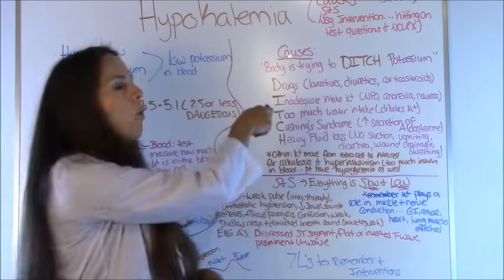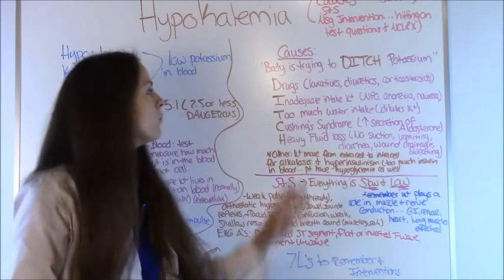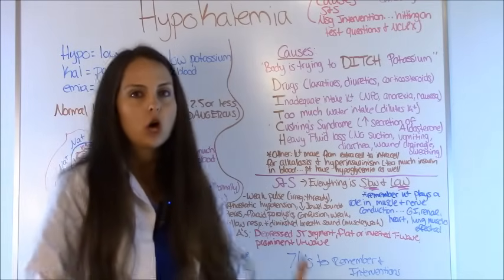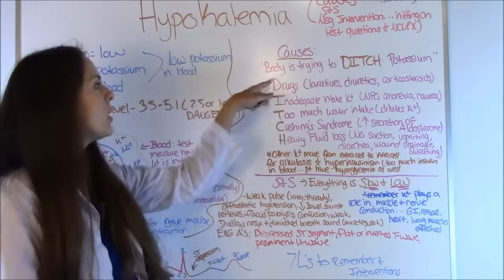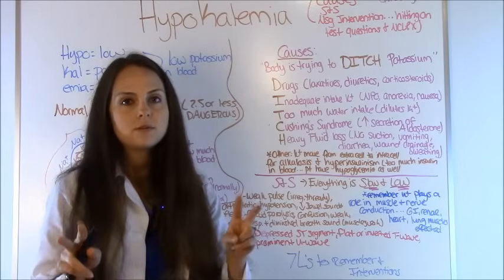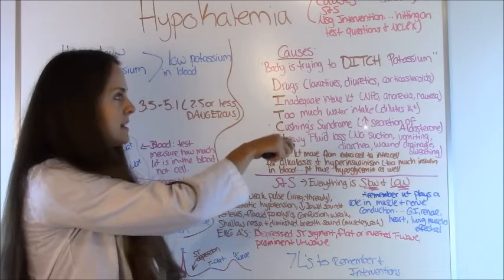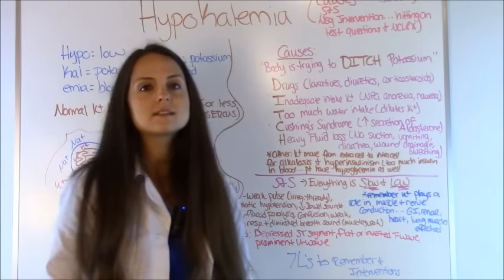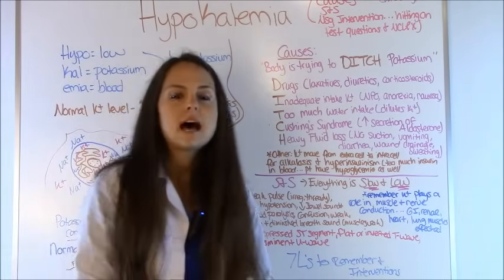What causes this to happen? I wanted to use this mnemonic to help you remember. Now remember, there's low potassium in your blood, and your body — remember this phrase — your body is trying to ditch potassium. The key word you want to get is DITCH. So I have taken DITCH and highlighted it with what you need to remember that causes it. So for D, drugs — drugs cause low potassium.